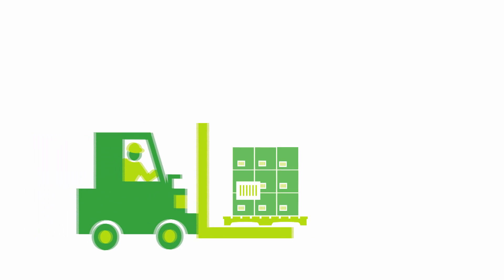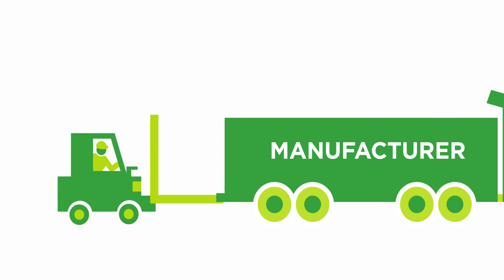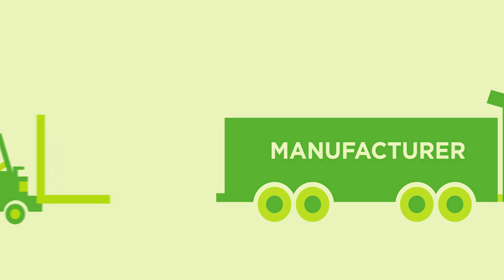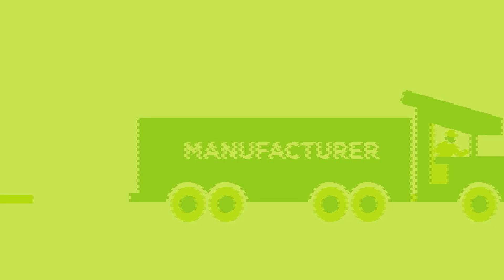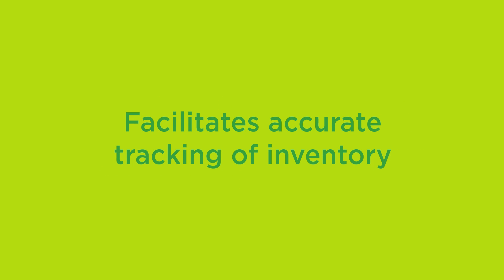GTINs and serial shipping container codes, or SSCCs, are used to track contents of shipments. This provides the foundation for patient safety, product traceability, and recalls, and facilitates accurate tracking of inventory.